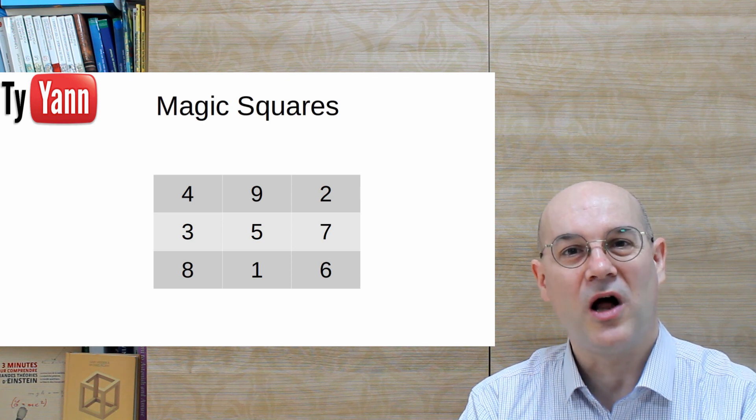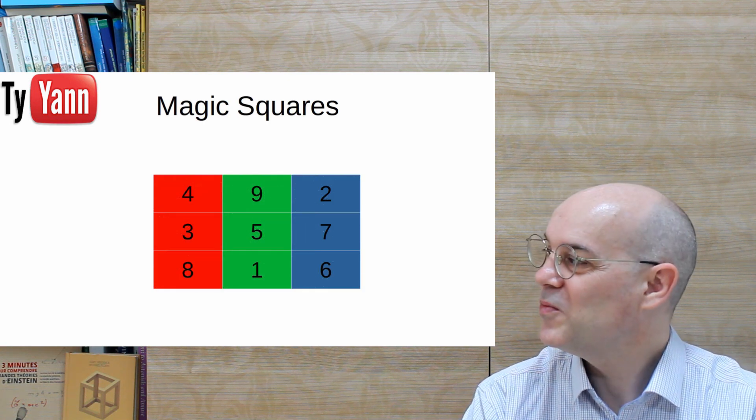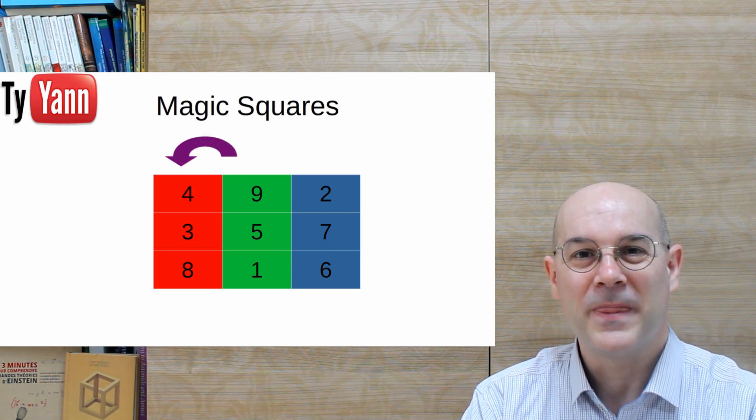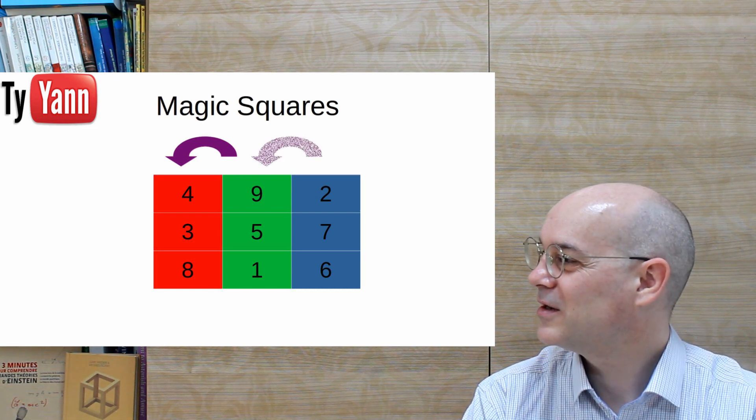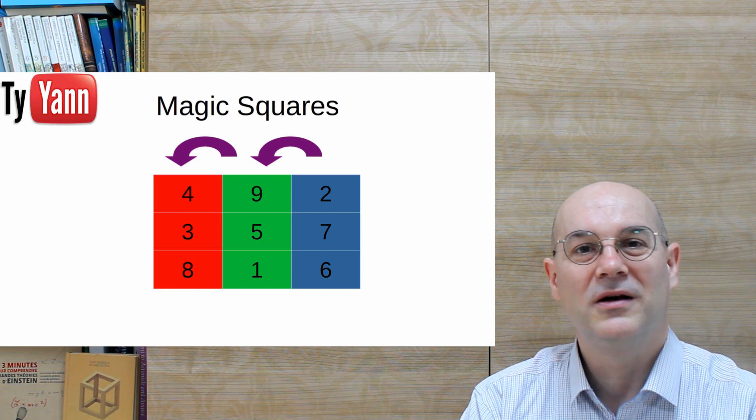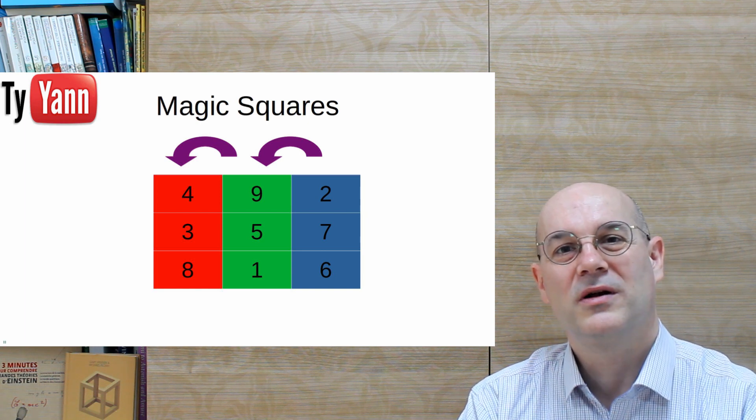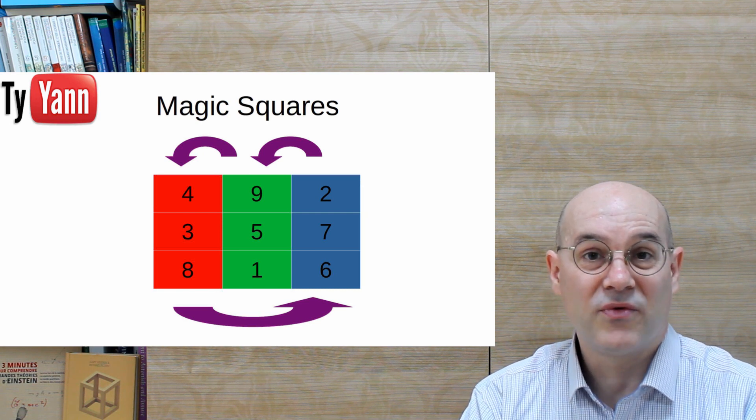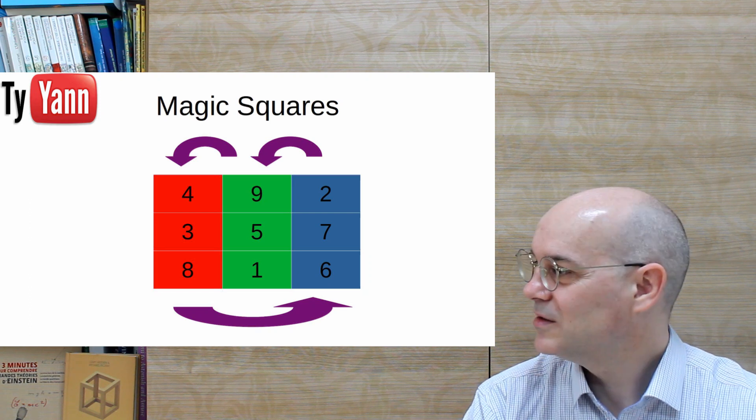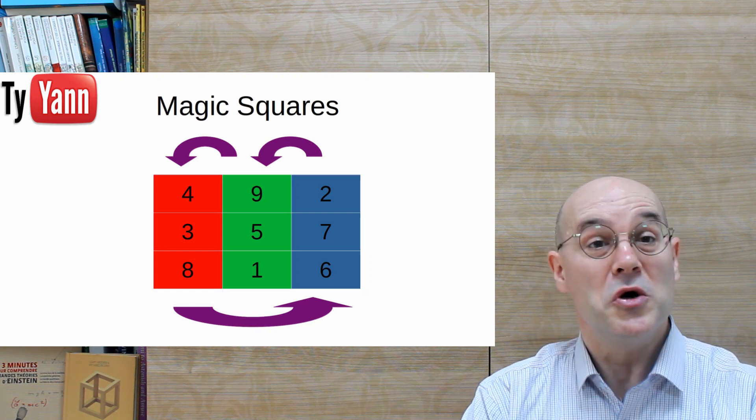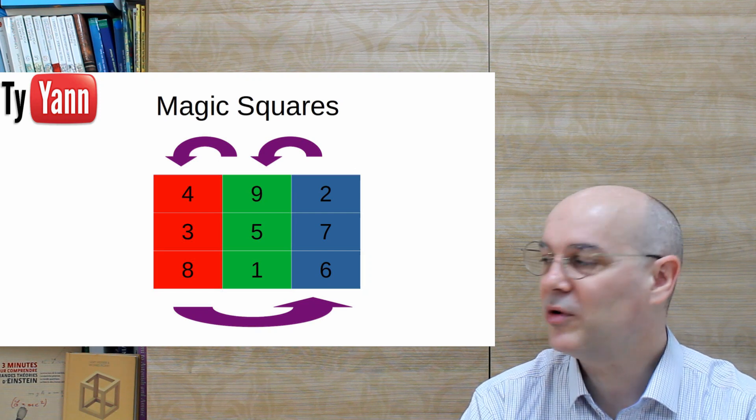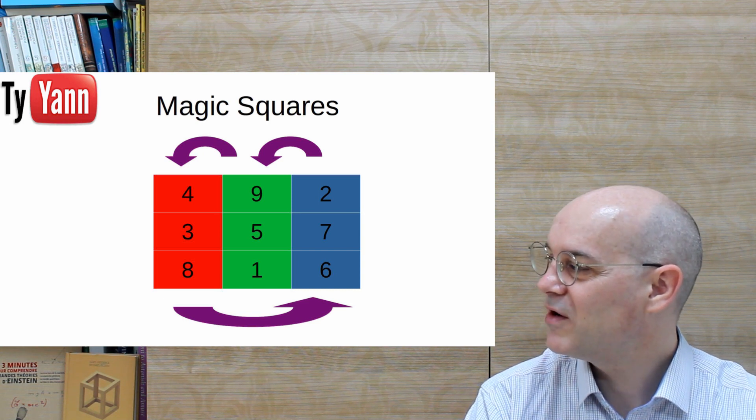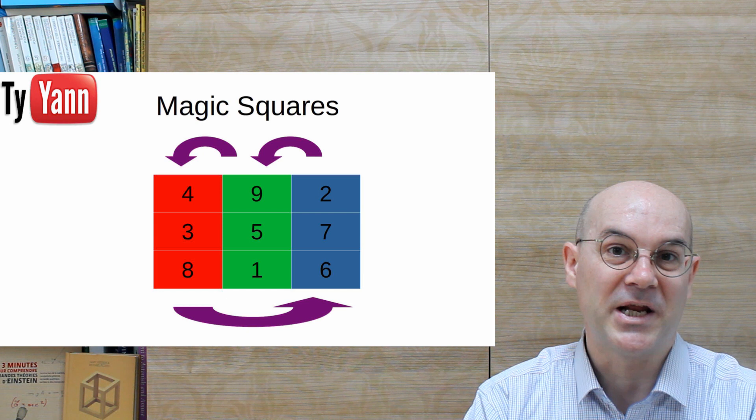We can do the same with the columns. So again, green is stronger than red. Blue is stronger than green. And finally, red is stronger than blue. So whether you choose the columns or the lines, you get a set of 3 non-transitive entities. I find that really cool. I mean, who knew that with this simple, this very old magic square, we would get such a very very interesting property.